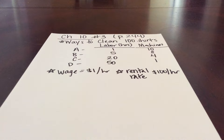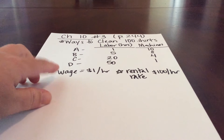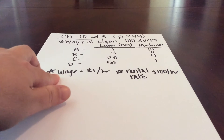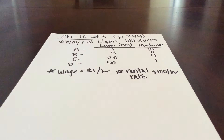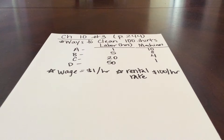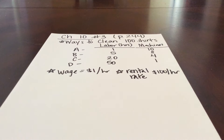Option A is 1 hour of labor and 10 machines. Option B is 5 hours of labor and 8 machines, and then you can see the options for C and D. The costs are also given for our labor and capital. For labor we'll pay a wage rate of $1 per hour, and for our washing machines we pay a rental rate of $100 per hour for the capital. So in order to determine economic efficiency, we're first going to have to calculate total cost.